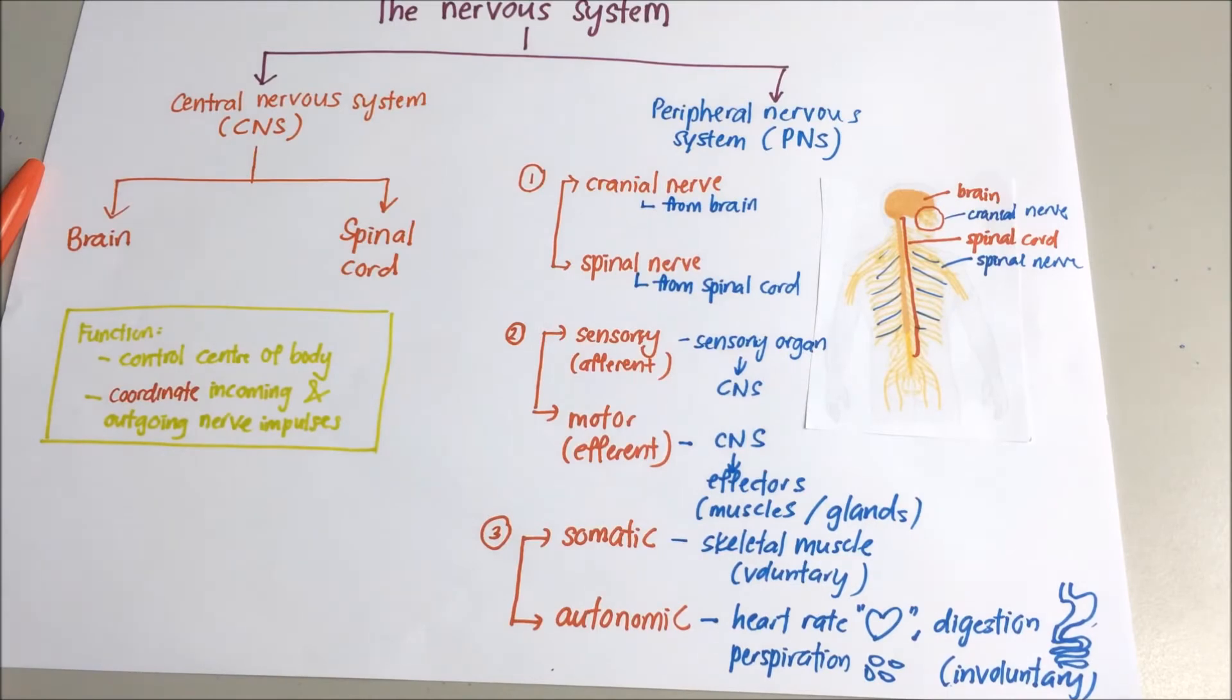Central includes your brain and also spinal cord. And under the peripheral nervous system, there are a few ways of categorizing it.